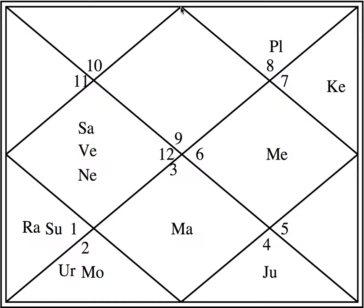In this North Indian diamond chart, the moment you see this rectangle in the center, these are angular houses. If you have not watched the video on angular houses then please go and watch it. The first, fourth, seventh, and tenth houses are Kendra houses. The ninth house, fifth house, and also the first house are Trikona houses. The first house is a dual house — dual in the sense it is also a Kendra and a Trikona. Primarily it is a Kendra.